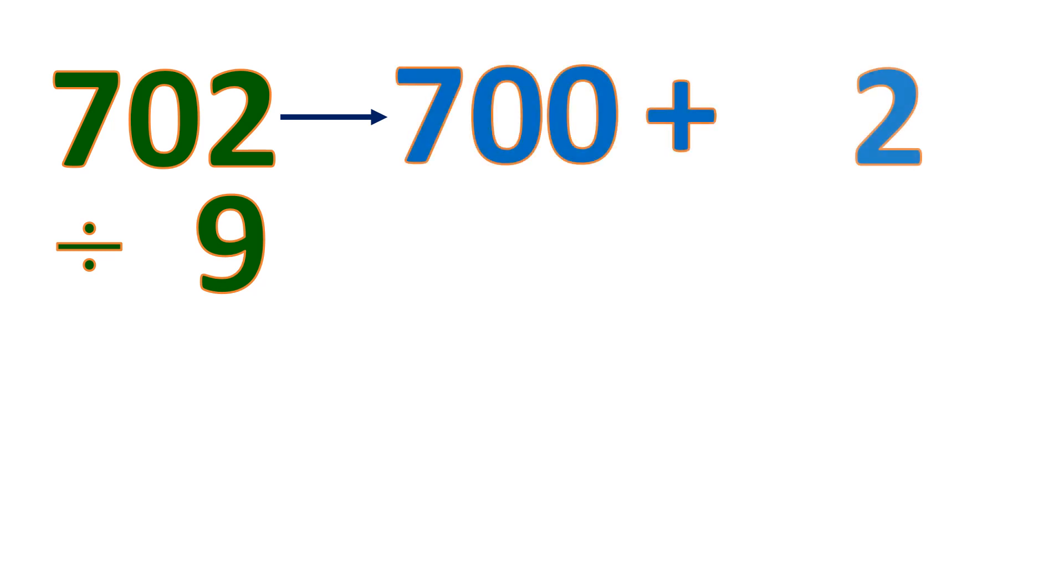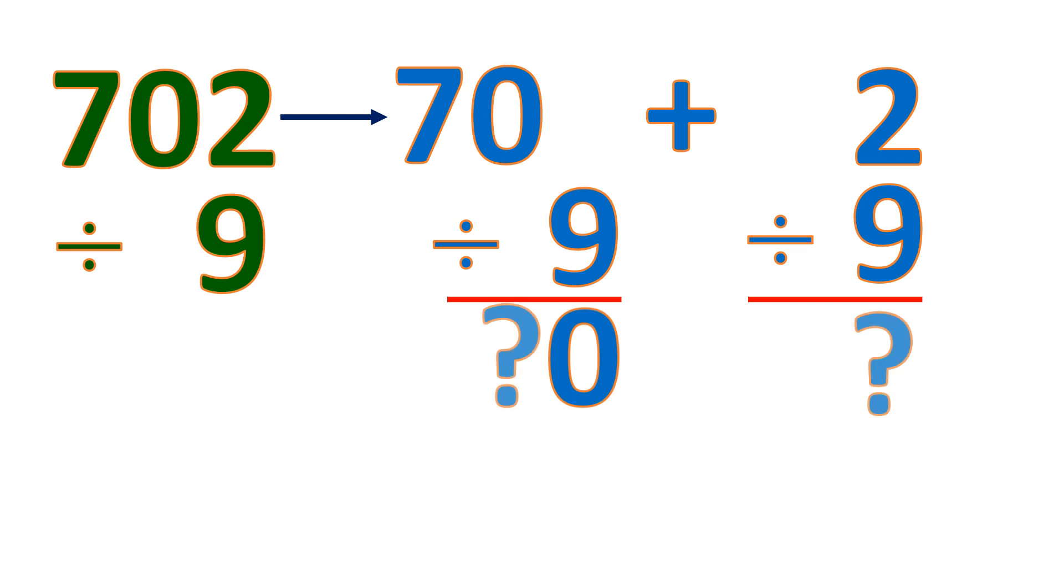Another example. 702 divided by 9. If we separate 702, and then we divide both by 9, we'll have some problems with this because 70 divided by 9 is hard to get, as well as 2 divided by 9. So we'll use another alternative to divide, which is subtraction.